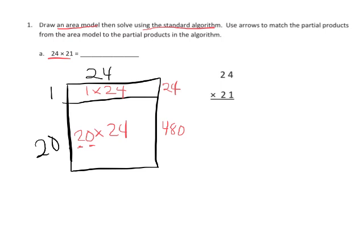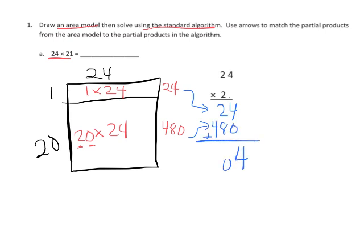Now relating this to the traditional standard algorithm: traditionally we would multiply by that 1 first, which gives us 24, and that goes right here. Then 480 goes right here. We add these together and we get 504.